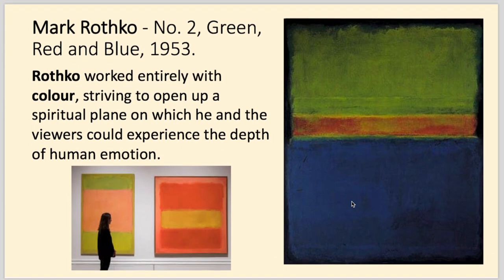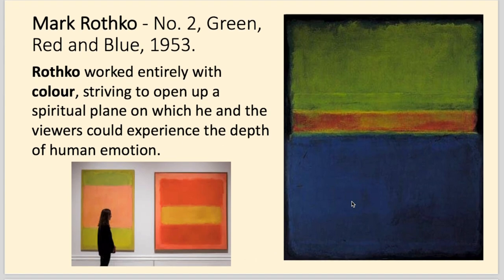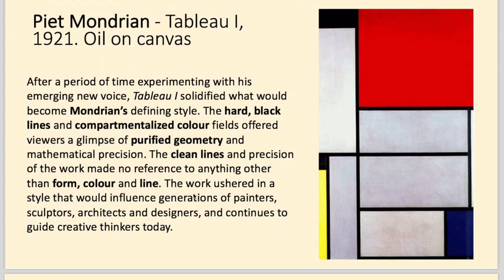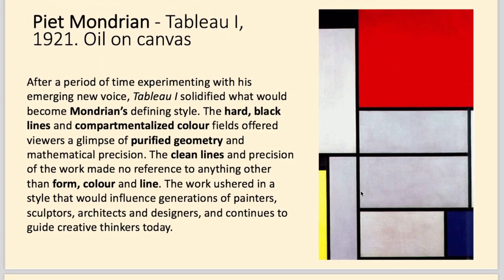Mark Rothko was really interested in colour and how it affects our emotions. His paintings are massive — you can walk into a space and be immersed in the simple colours he creates, experiencing the mood he's trying to portray. And Mondrian — you may have seen this style of art — worked out a way of purifying everything he saw into just form, colour and line, using simple, bold primary or secondary colours with white squares and black lines.